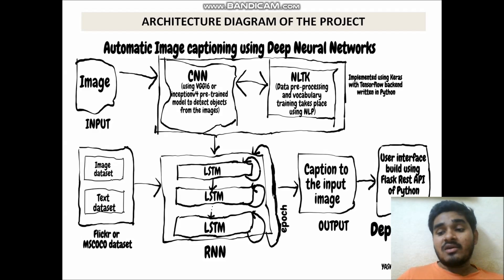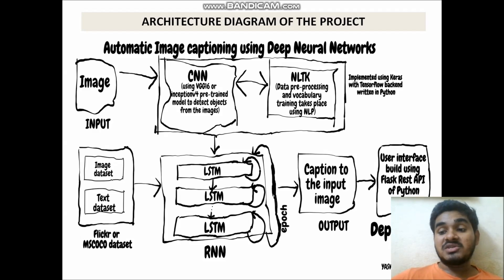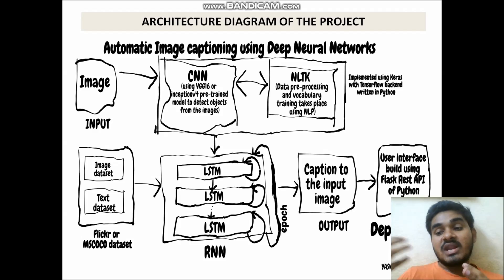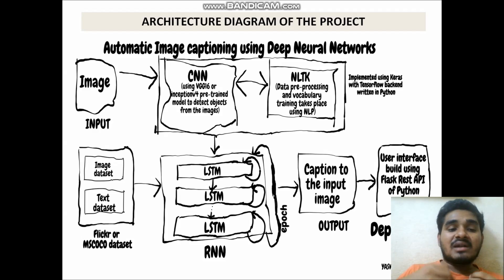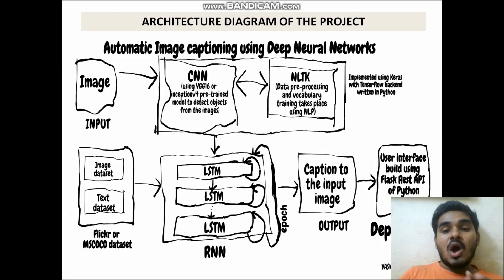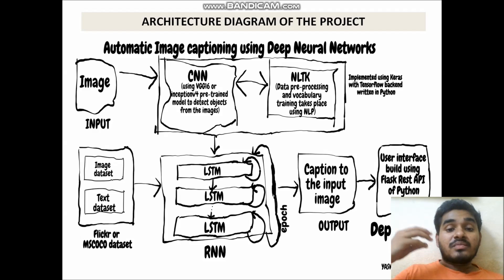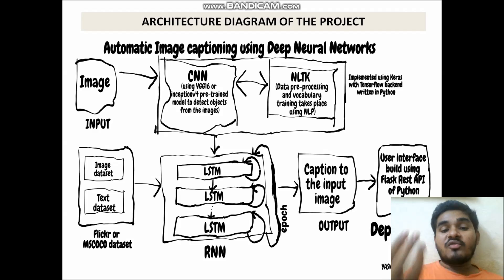In order to train our model to detect captions for images, we need to provide training to the LSTM. That training is given using the Flickr dataset, which is open source, so our model can be trained using it. After training, our model has some knowledge, and based on that knowledge the LSTM model can caption images automatically.